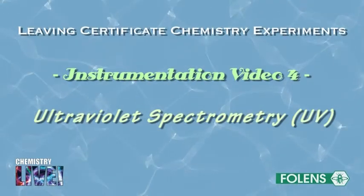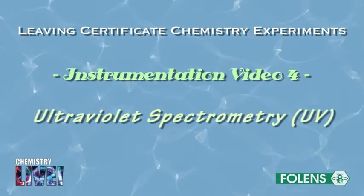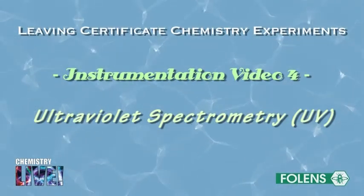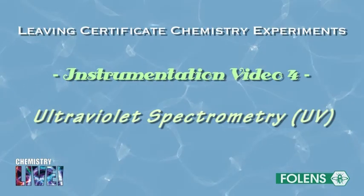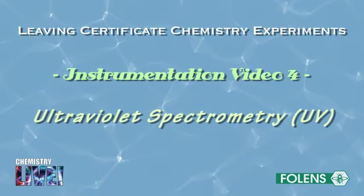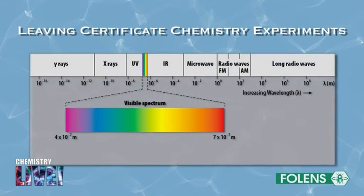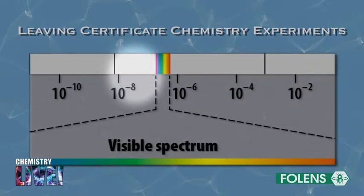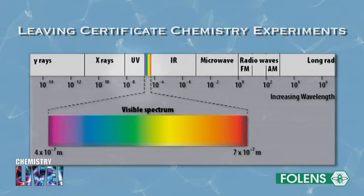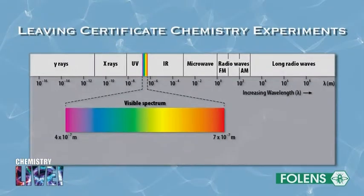You may have observed the effects of UV radiation in discos, as clothes glow when exposed to UV radiation from a mercury lamp. Ultraviolet radiation has a wavelength of approximately 10 to the minus 7 metres, which is shorter than the wavelength of visible light. The main source of ultraviolet radiation is the sun.